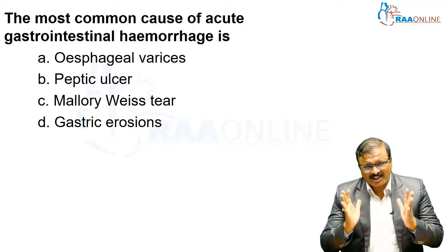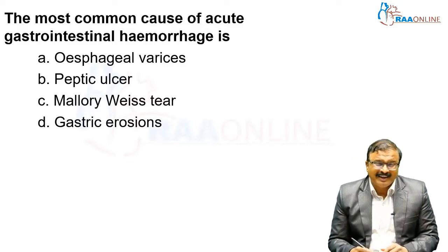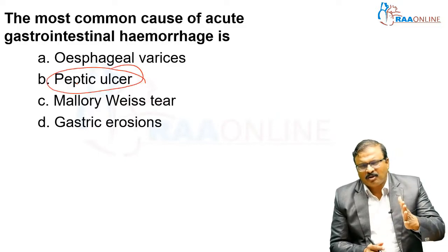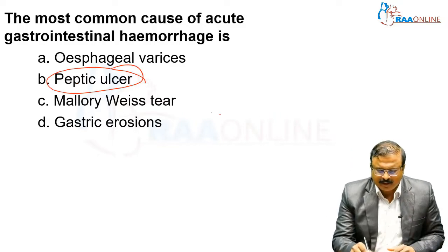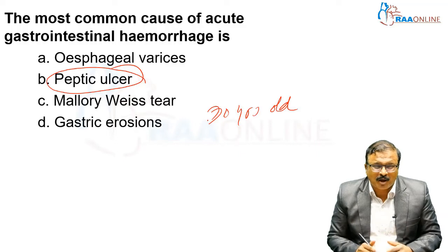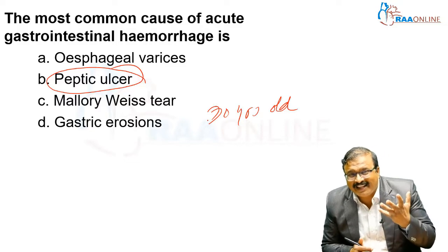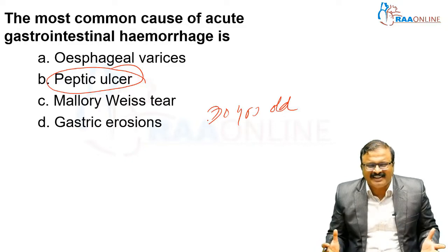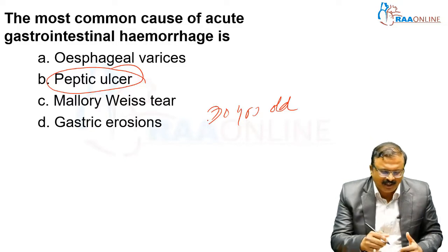The most common cause of acute GI hemorrhage is peptic ulcer. Mallory-Weiss is associated with prolonged retching. In a scenario of a 30-year-old with no comorbidities presenting with acute hematemesis, the most likely diagnosis is peptic ulcer. If examination shows ascites and jaundice, you can suspect liver disease and say it is esophageal varices.